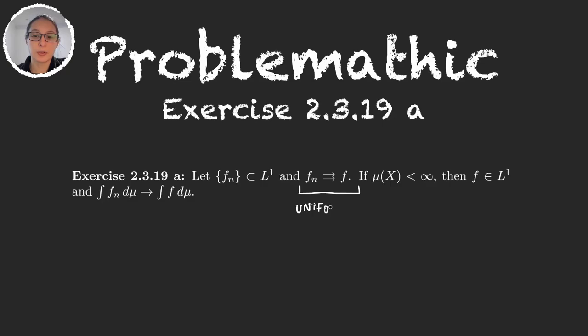In part a we have a sequence of functions in L1 that converge uniformly to some function f, and what this is telling us is if we have a finite measure, then this limit function is in L1 and the integrals of the sequence converge to the integral of f. So basically we can pull the limit out of the integral.